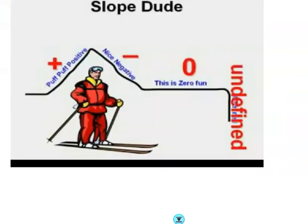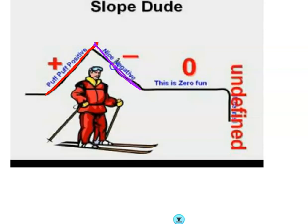Some of you may know Slope Dude — he's a skier. I'll attach the Slope Dude video in the description. When he's going up the hill from left to right, that's a positive slope. Going down the hill from left to right is a negative slope. Rise and run to the right is positive; rise and run to the left is negative.